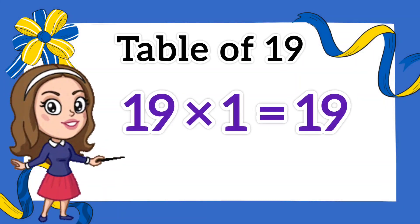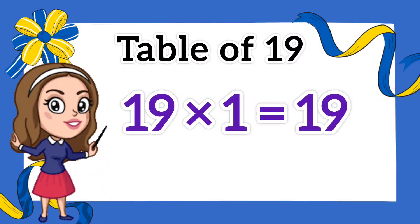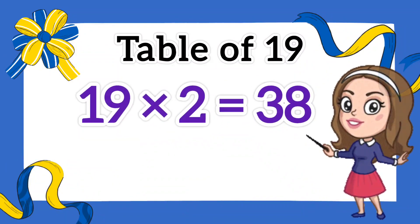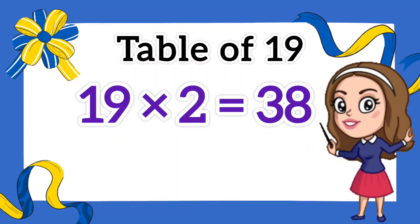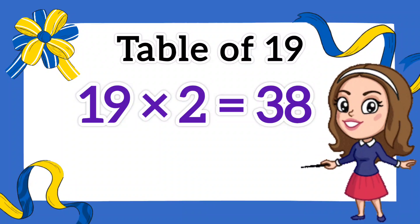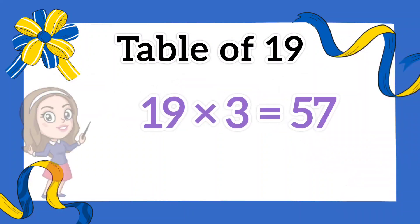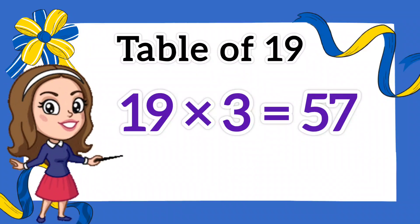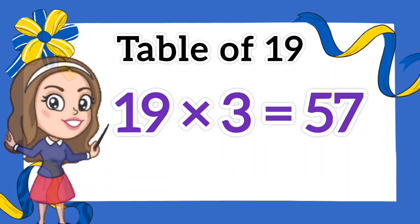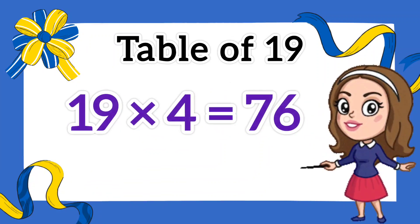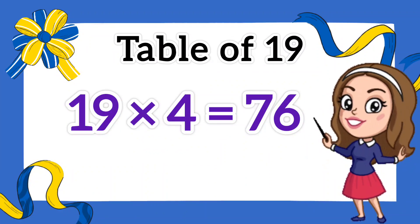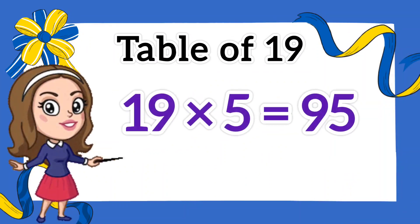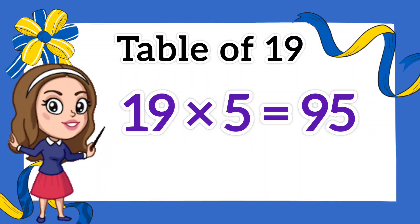Nineteen ones are 19. Nineteen twos are 38. Nineteen threes are 57. Nineteen fours are 76. Nineteen fives are 95.